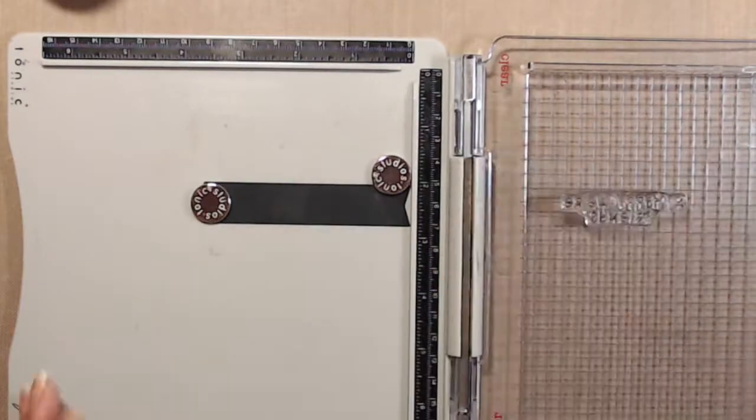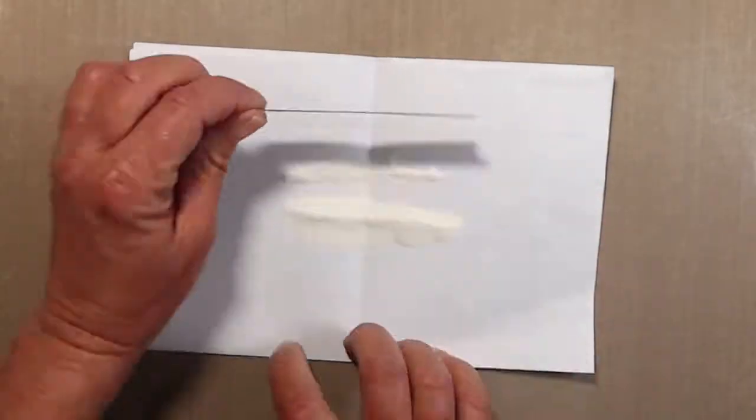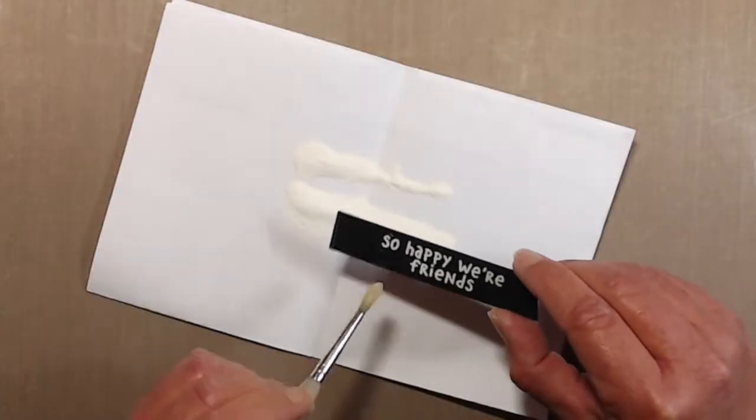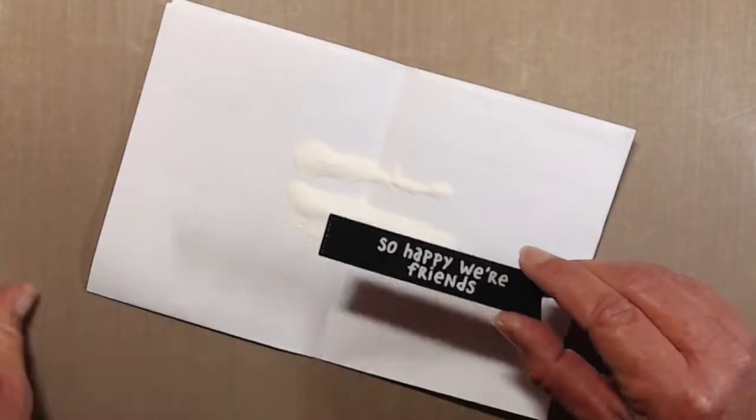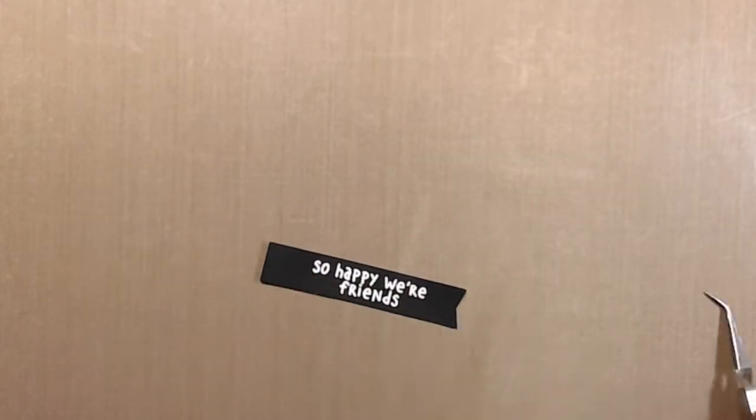So I treated it with my anti-static powder tool. Then I stamped the sentiment using Versamark ink, coated it with white embossing powder, and used my heat gun to melt it until it was smooth and shiny.